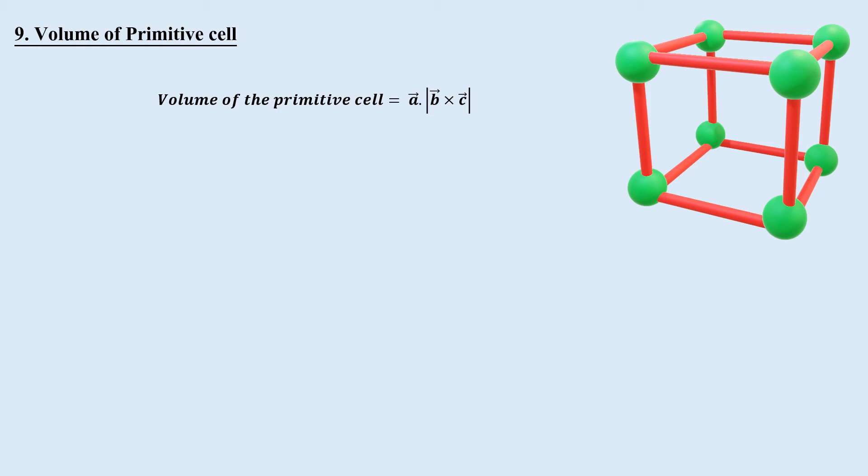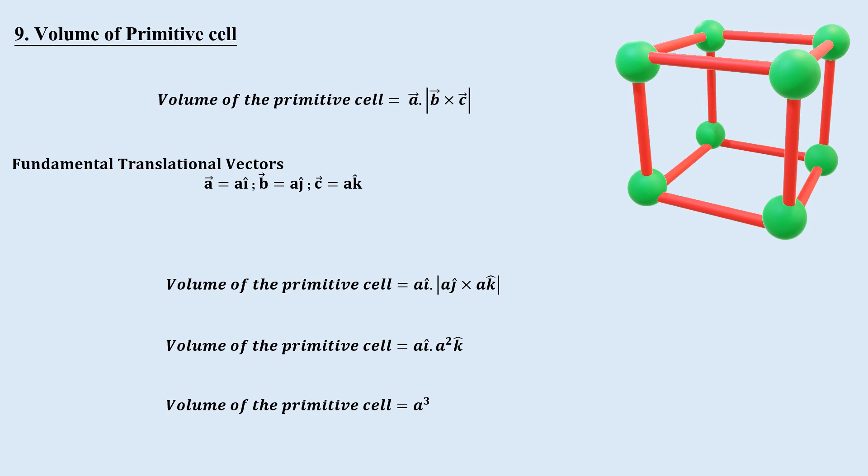Volume of primitive cell: Primitive cells are those cells having total number of atoms is 1 inside the lattice and all atoms are at the corner points. Simple cubic unit cell is a primitive cell having fundamental translational vector ai cap, aj cap and ak cap. Hence, its total volume will be a cube, which is same as the volume of the unit cell.